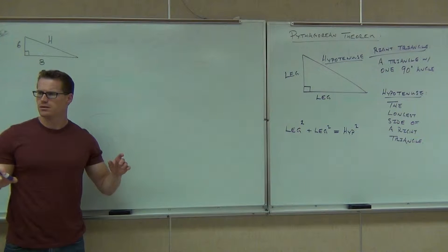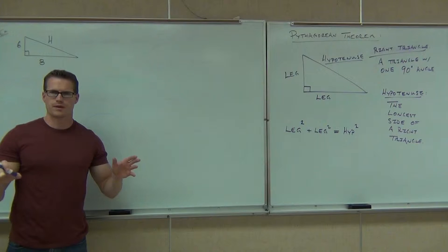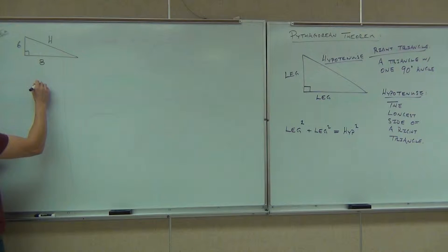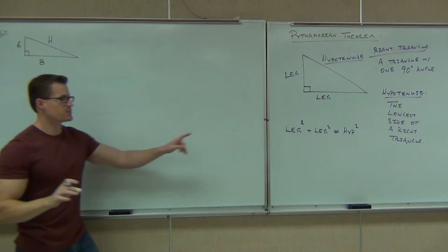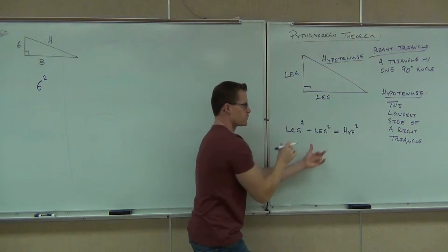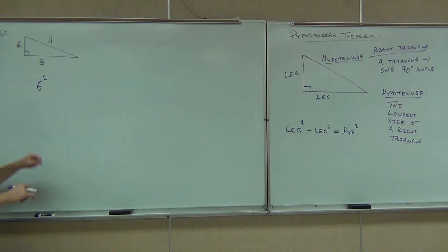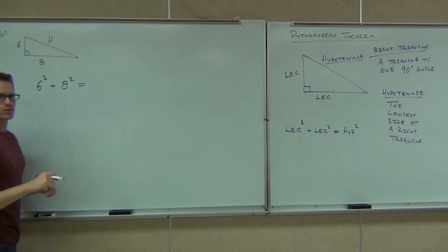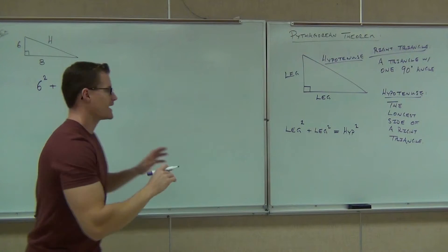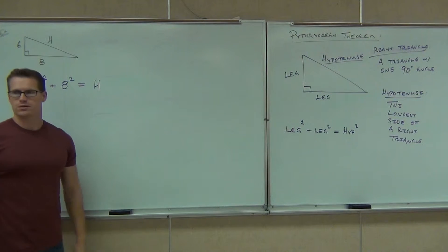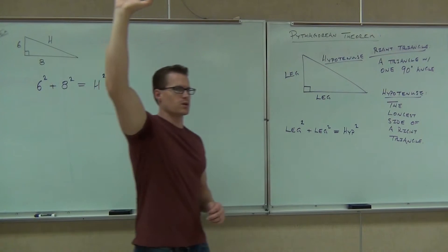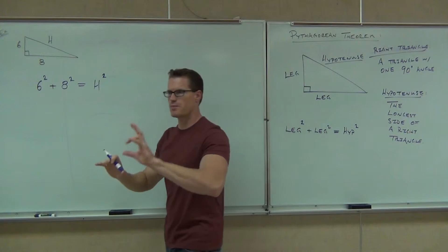What was one of your legs? What's the other leg? And the hypotenuse we have has a letter: H. So the Pythagorean theorem says leg squared plus leg squared equals hypotenuse squared. One of the legs is 6 — it doesn't matter what order because addition is commutative — plus the other leg squared, equals H squared. It should be: a leg squared plus a leg squared equals a hypotenuse squared.